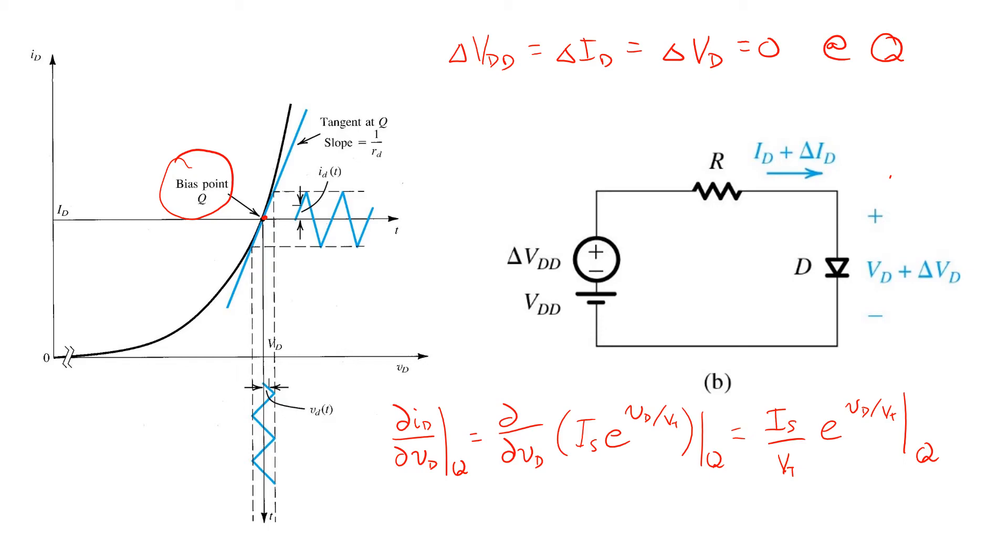And at the bias point Q, we know that the diode voltage VD is given by uppercase VD. So we end up with an expression like this.